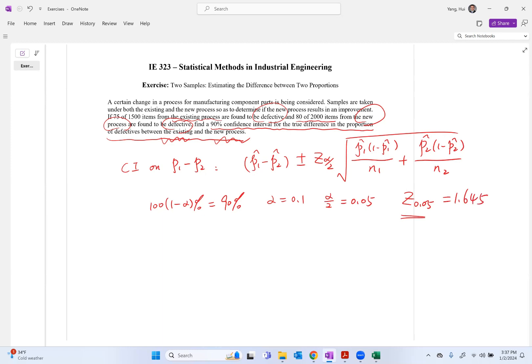p1 hat equals 75 over 1500, which equals 0.05. And p2 hat equals 80 over 2000, which equals 0.04.